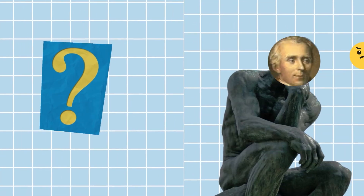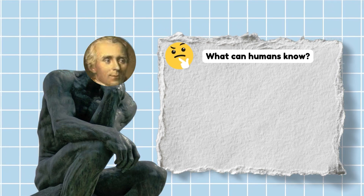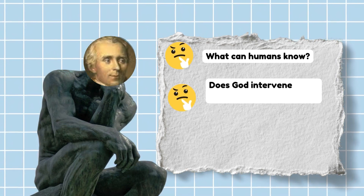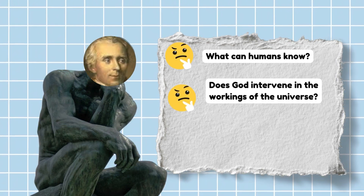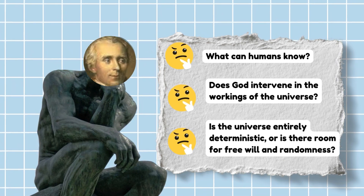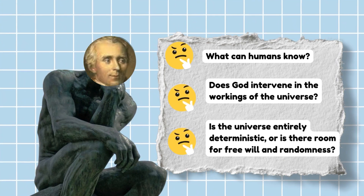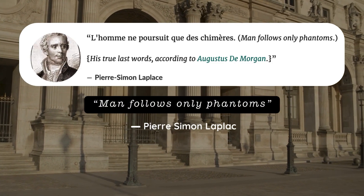Another thing he struggled with is: let's assume the future is determined — can it be known by a human being? That's a separate question, because it might be determined and we might not be able to know it. He said that maybe an all-knowing being — which obviously that's not us — would be able to know the determined future. But he did grapple with questions about the existence of God and his hands in our lives. His biography is really a biography of a man who wrestles with God his whole life, and he ended his life with this sentence: 'We are chasing phantoms.'